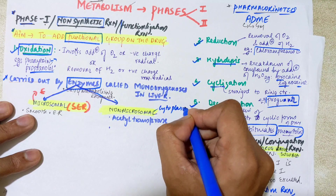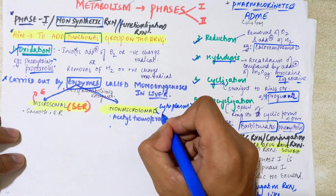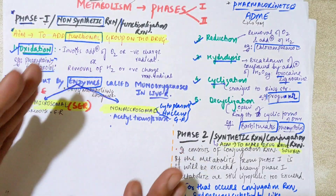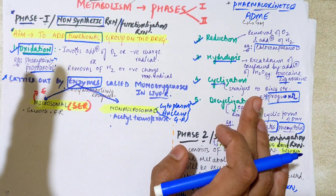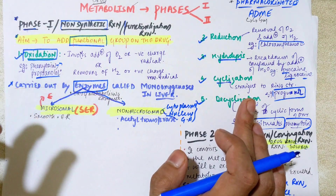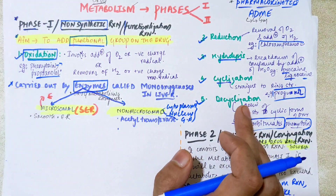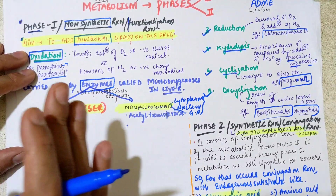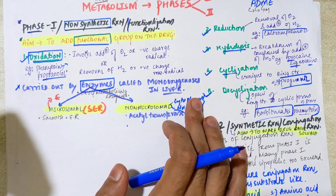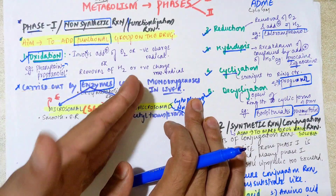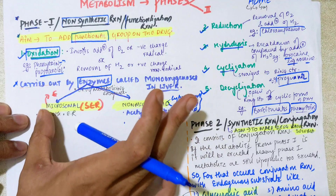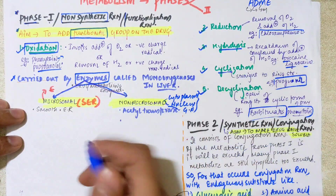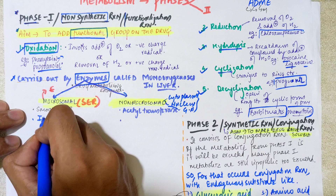Non-microsomal enzymes are found in the other areas of the cell: the cytoplasm, nucleus, lysosomes, Golgi apparatus, and other organelles. Microsomal enzymes are found specifically in the smooth endoplasmic reticulum, primarily in the liver and also in the kidney. The key reason for this division is that microsomal enzymes are inducible — their activity can be enhanced or inhibited.